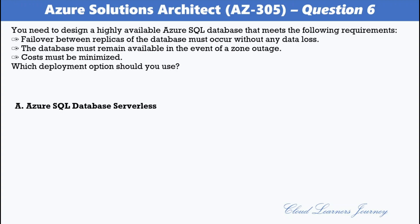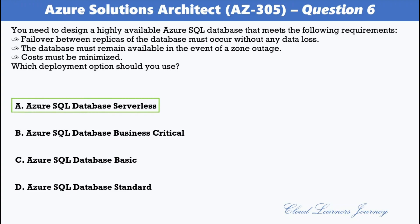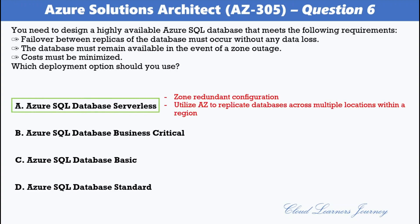The options are: A. Azure SQL Database Serverless, B. Azure SQL Database Business Critical, C. Azure SQL Database Basic, D. Azure SQL Database Standard. The correct option is A. Azure SQL Database Serverless, which allows for zone-redundant configuration. This feature uses Azure Availability Zones to replicate the database across multiple physical locations within an Azure region.